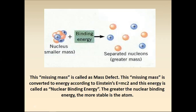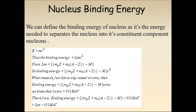The greater the nuclear binding energy, the more stable the atom. To calculate nuclear binding energy, we use the equation ΔE = Δm·c². The mass defect Δm = Z·mp + (A−Z)·mn − M, where Z is atomic number, A is mass number. Mass is calculated in atomic mass units (amu), and from 1 amu we get 931 MeV of energy. Therefore binding energy can be calculated using this equation.